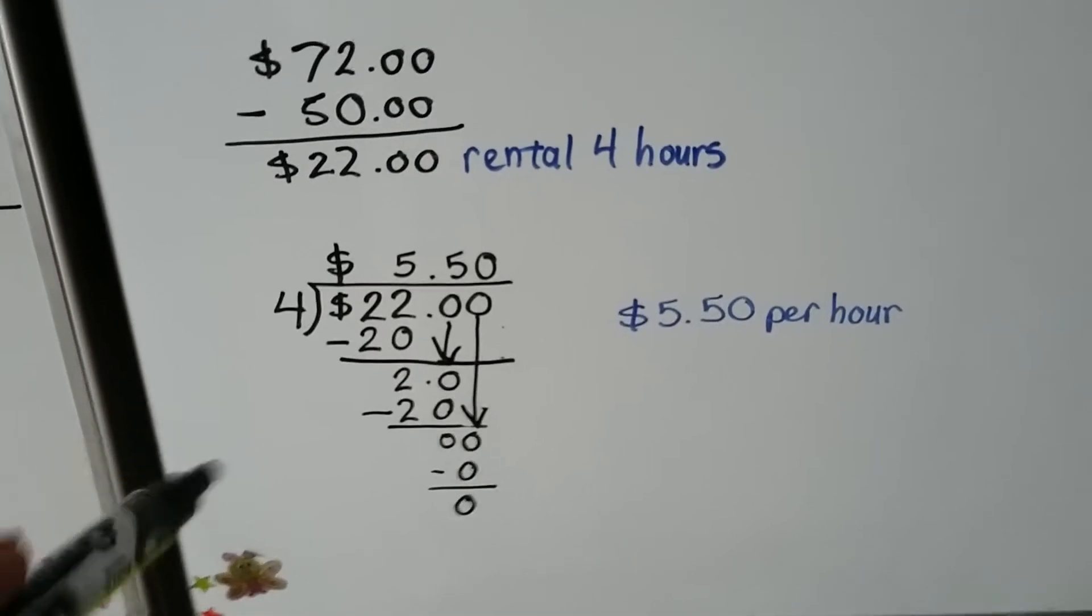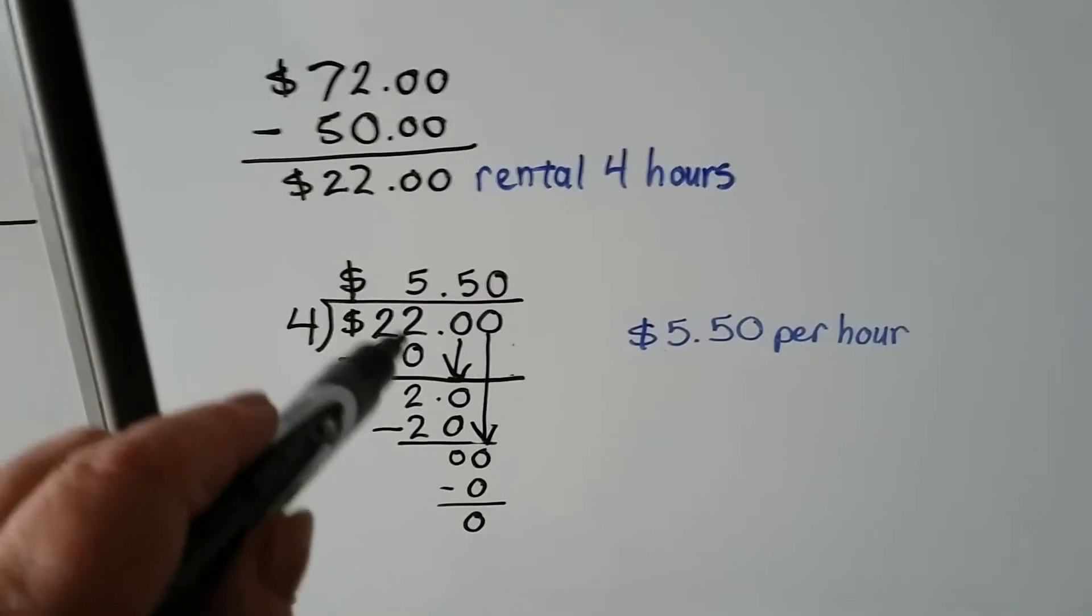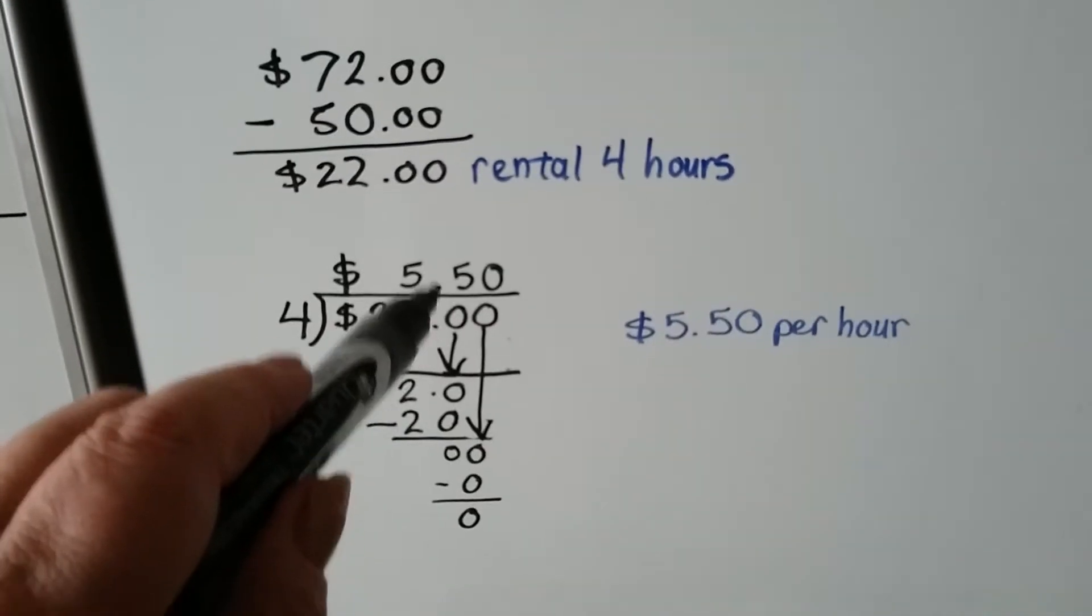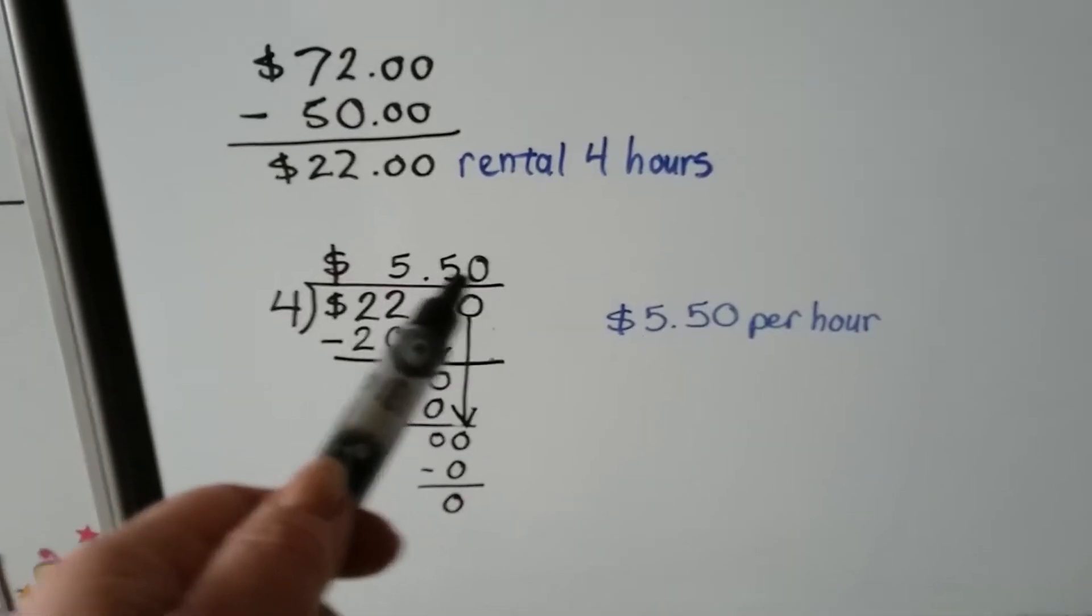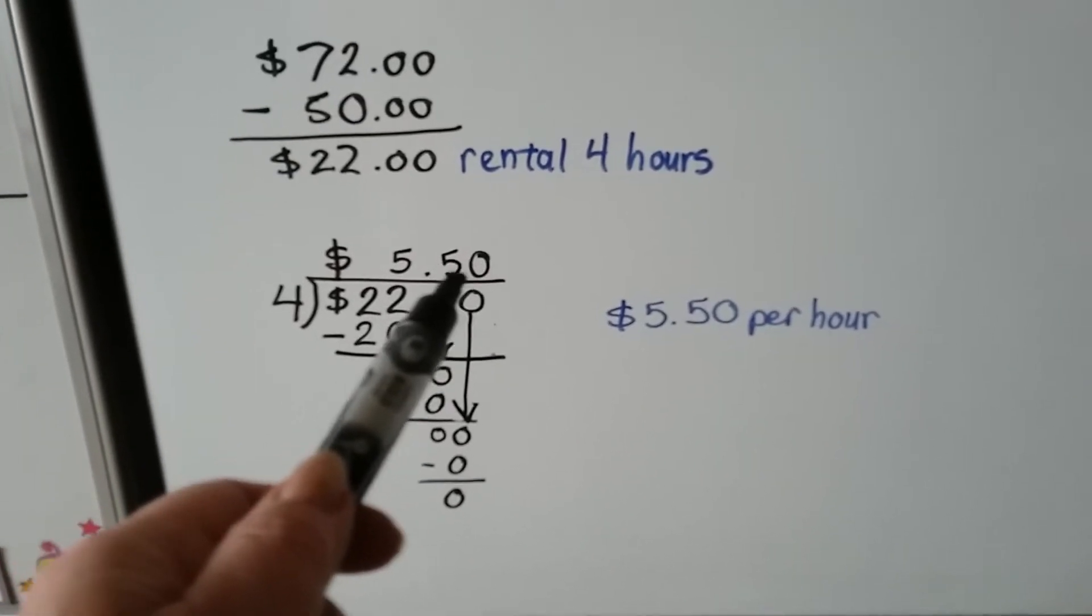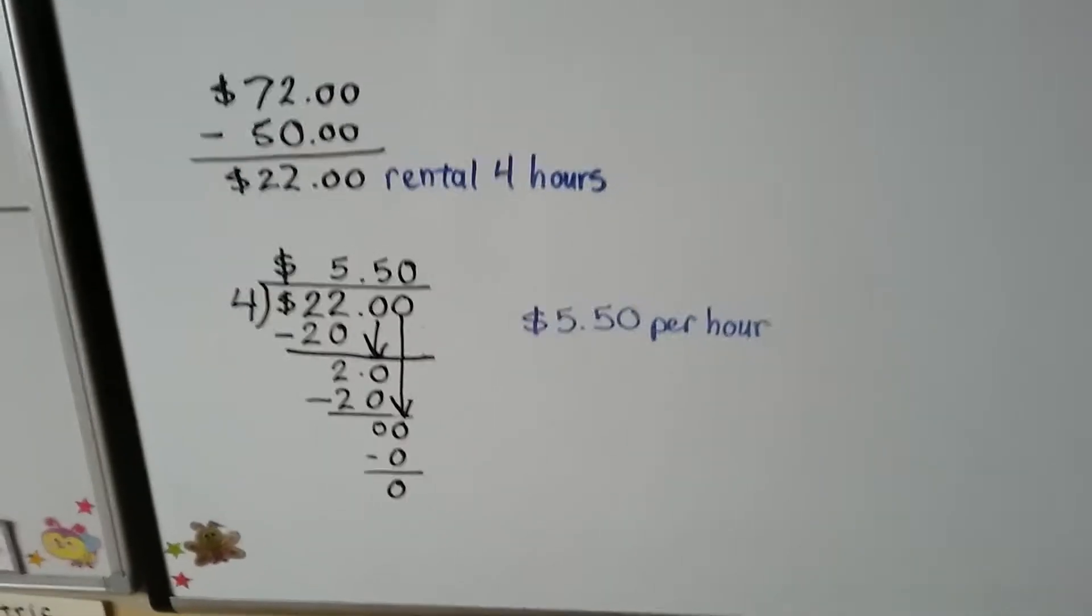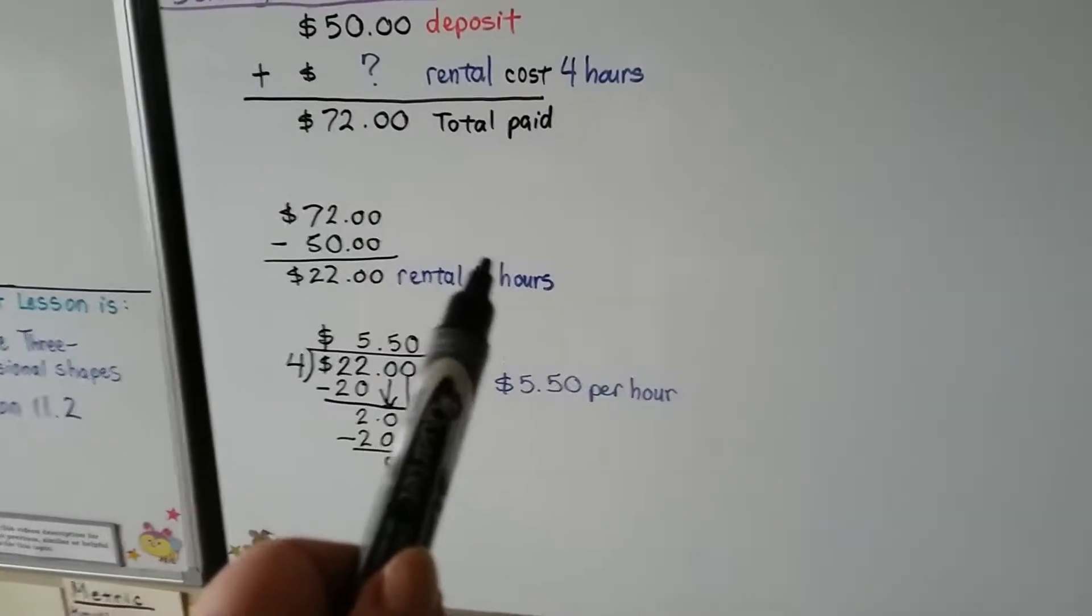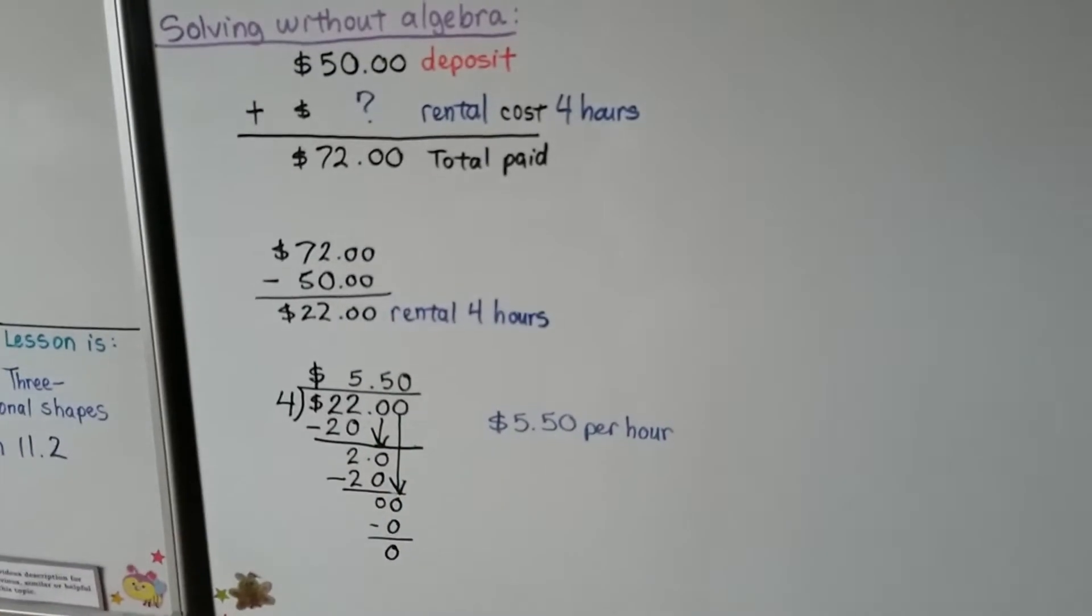Because we're dealing with money and when we're using decimals in long division, the decimal point goes straight up into the quotient. So we know that there has to be two digits here because it's money. So it's $5.50 per hour. So keep in mind that he rented it for four hours and we were looking for how much the per hour charge was.